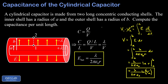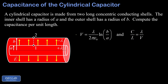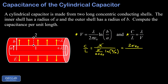Now we just carry out our original plan for computing capacitance per unit length: take lambda, the linear charge density, and divide by the potential difference V. The capacitance per unit length is lambda divided by the potential difference, which was lambda over 2 pi epsilon-zero times the natural log of b over a. The lambdas cancel, and 2 pi epsilon-zero ends up in the numerator, giving us a capacitance per unit length of 2 pi epsilon-zero divided by the natural log of b over a.